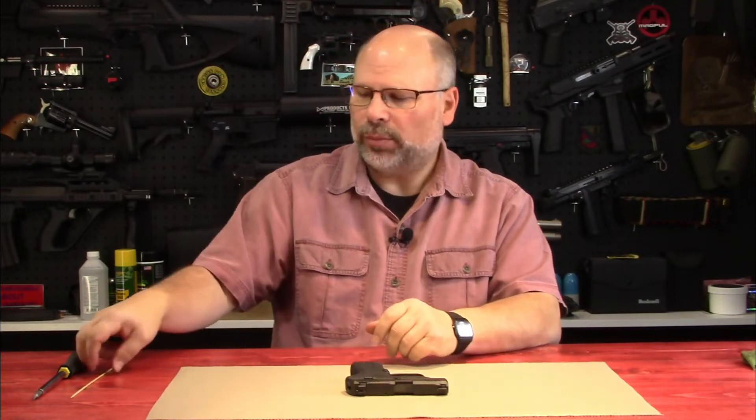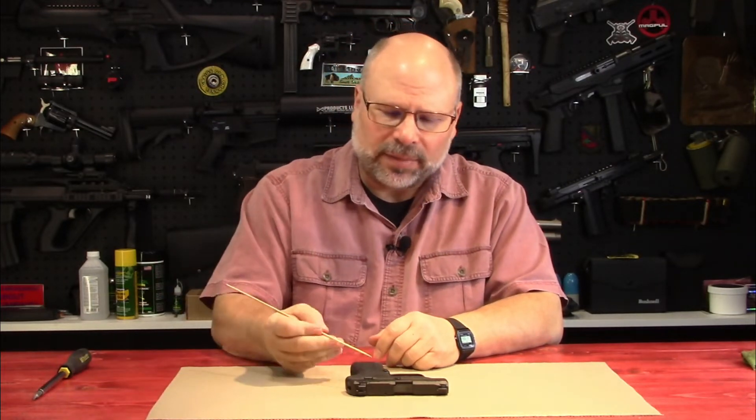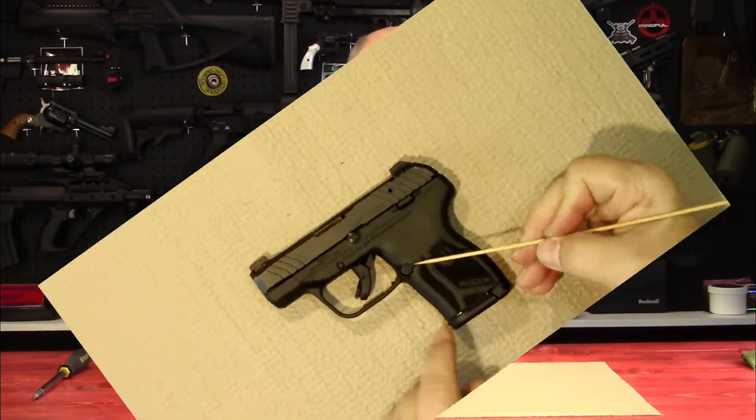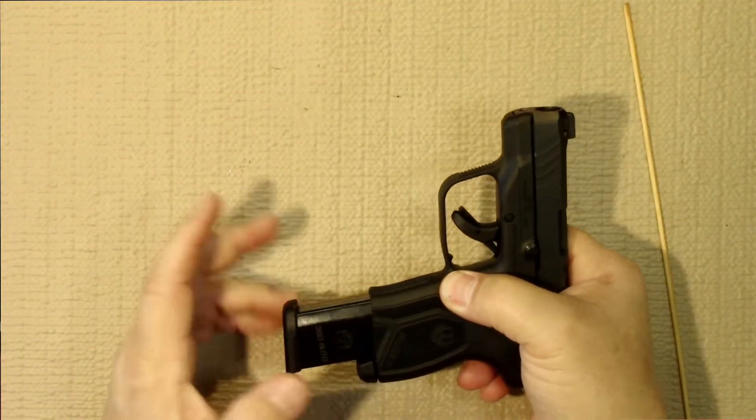The first step before working on any firearm is to make sure it is free and clear of all ammunition. So the first step would be to remove the magazine. The magazine release is right here, so you push down on that. That would release the magazine.